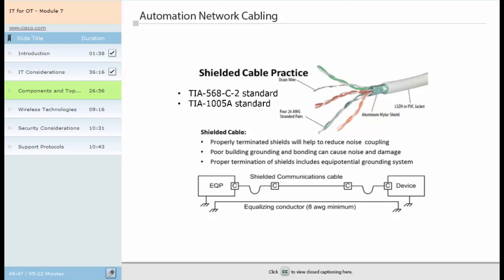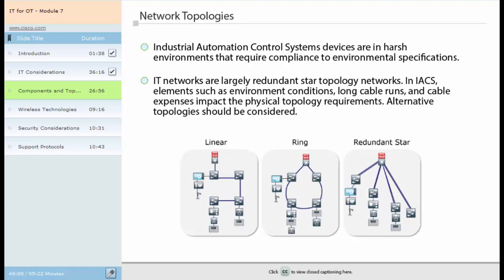Industrial automation control system devices and network infrastructure often include long cable runs in potentially non-controlled conditions such as humidity, varying temperatures and noise vibrations. These challenges are what IACS networks face that typical enterprise networks do not. Network design should take into consideration compliance regulations and potential environmental hazards. Elements such as harsh environmental conditions, long cable runs and expensive cable determine how the network topology for IACS networks is designed. Unlike IT networks, which often form redundant star topology networks, IACS network formations are driven by physical requirements such as the series of interconnected motion devices of an assembly line. Alternative topologies such as linear, ring and star need to be considered.